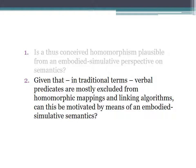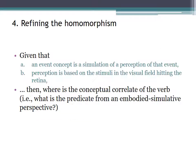Let's turn to the second question. Given that in traditional terms verbal predicates are mostly excluded from homomorphic mappings and linking algorithms, can this be motivated by means of an embodied-simulative semantics? Let's briefly recapitulate. Given that an event concept is a simulation of a perception of that event, and perception is based on the stimuli in the visual field hitting the retina, as I have argued, then where is the conceptual correlate of the verb? That is, what is the predicate from an embodied-simulative perspective?